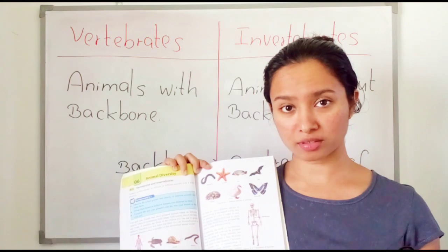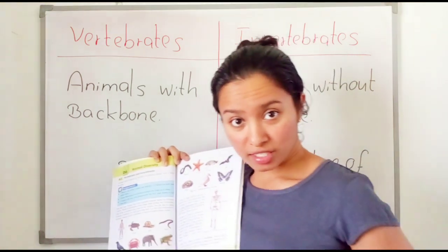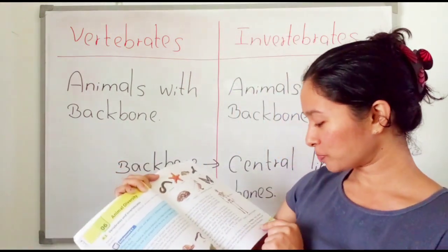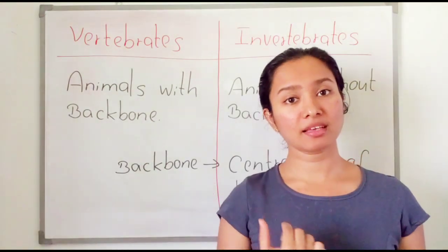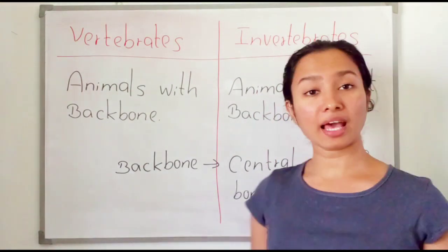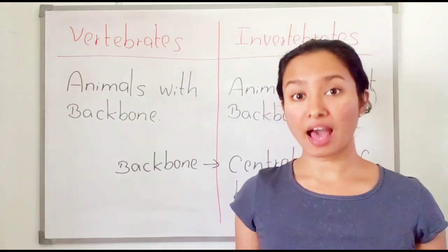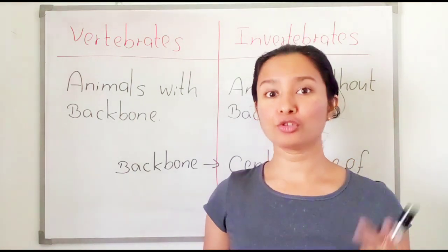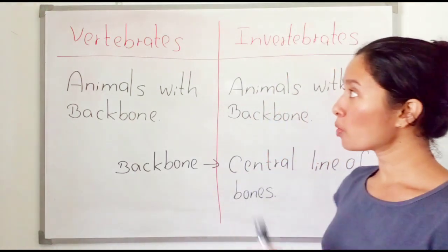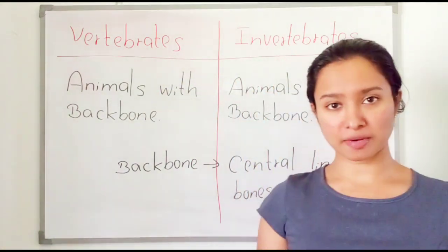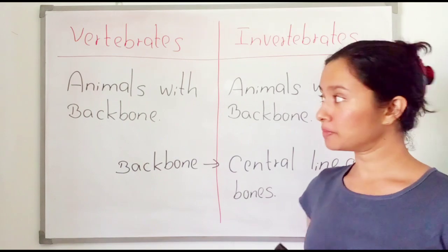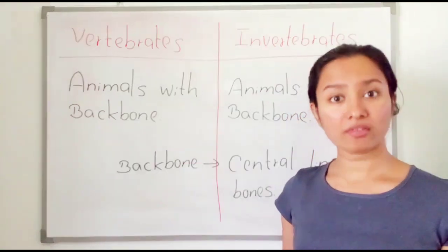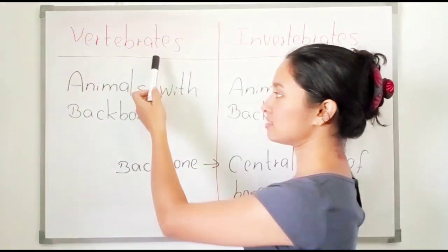You have a backbone — touch your back, you can feel it. Some animals have a backbone and some animals do not. So basically, animals are divided into two main groups: vertebrates and invertebrates. Vertebrates are the animals with a backbone.